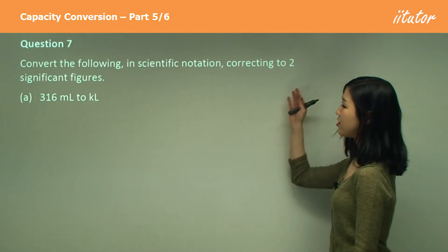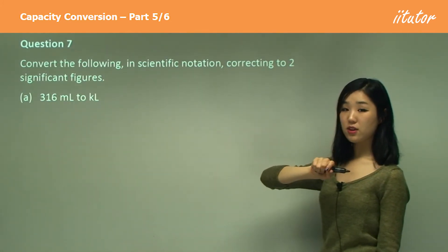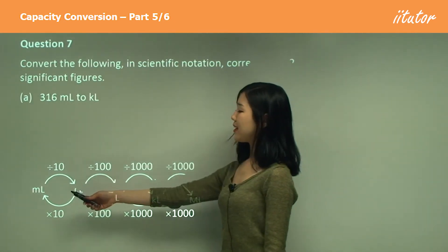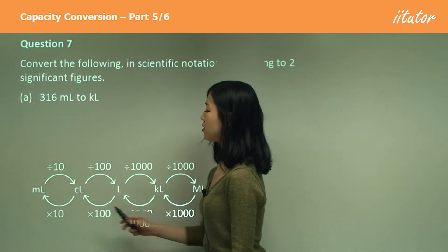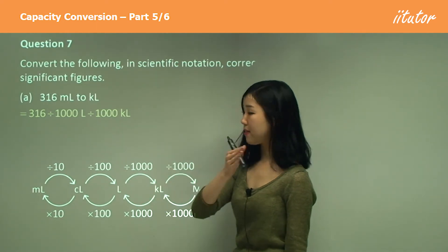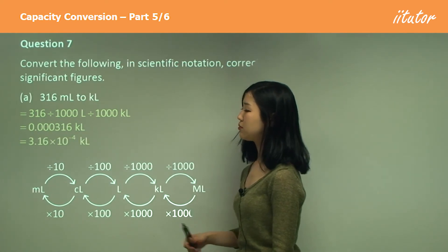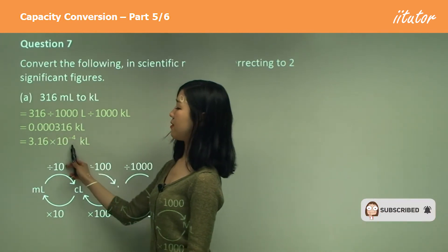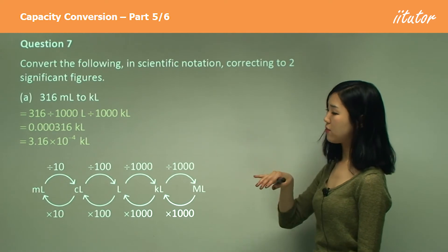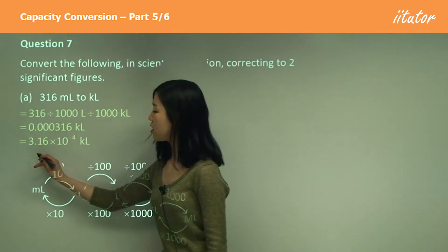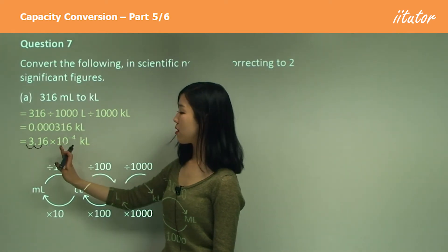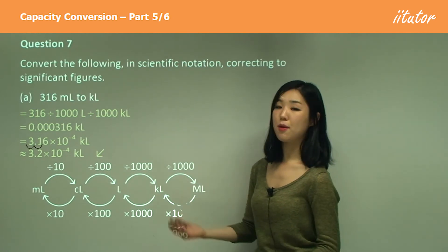Convert the following in scientific notation, correct to two significant figures. So as well as putting it in scientific notation, I want the answer in two significant figures — be extra careful with this. Millilitres to kilolitres: we're going to divide because it's small to large, so we divide by a thousand and a thousand again, which means we divide by a million — go back six places. Now I want to put my decimal in front of 3, so we'll have to go back four places to the original spot. For two significant figures, we go 1, 2 — the next number is greater than 5, so I round the 1 up to 2. So it's going to be 3.2 times 10 to the power of negative 4.